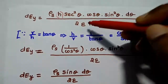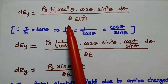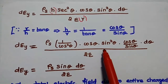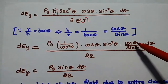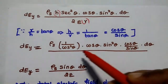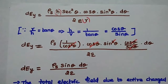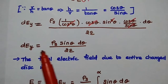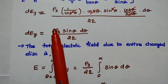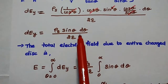Replacing h/r with cos theta / sin theta, and writing sec squared theta as 1/cos squared theta, we can simplify all the cosine and sine terms. The cosines cancel with cos squared theta, and the sine terms simplify as well. Finally, we get dEy equal to rho s · sin theta · d theta divided by 2·epsilon. This is the electric field component in the y direction at point P due to the small annular ring.